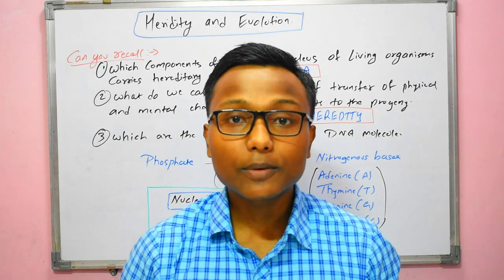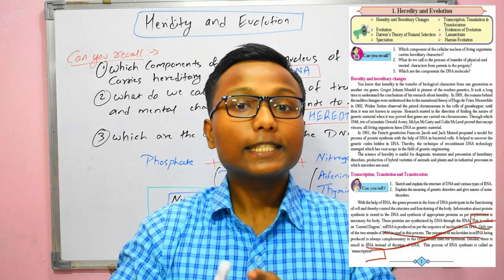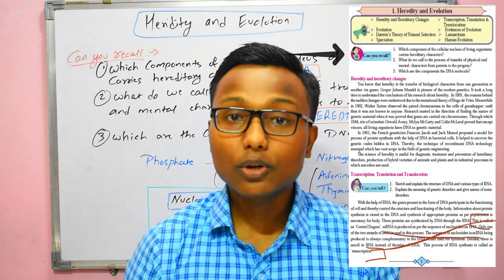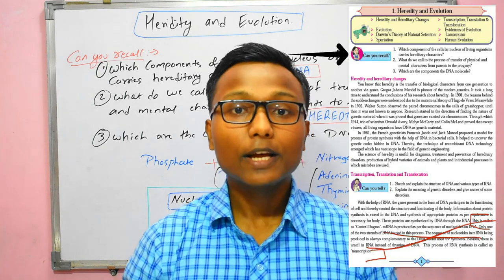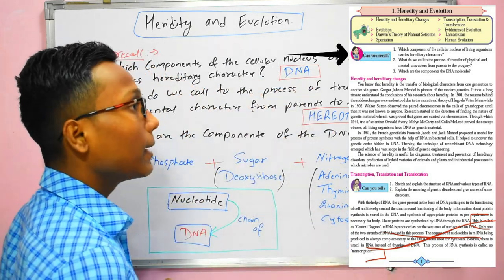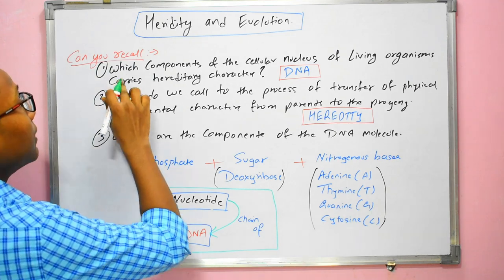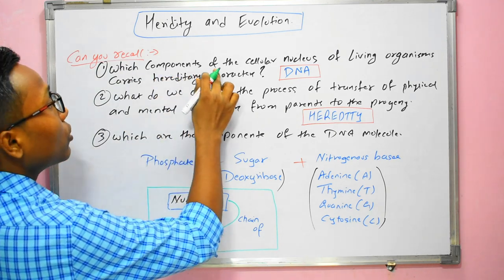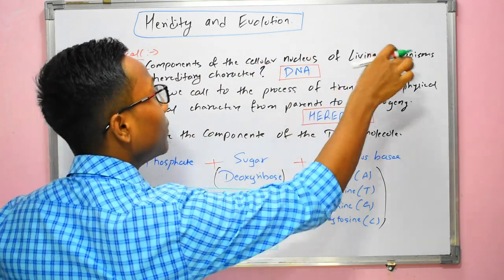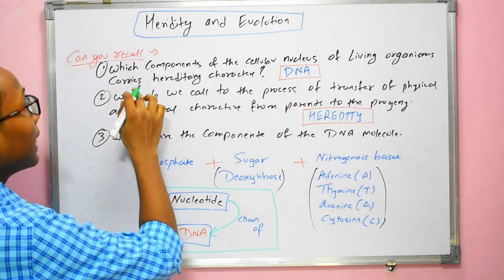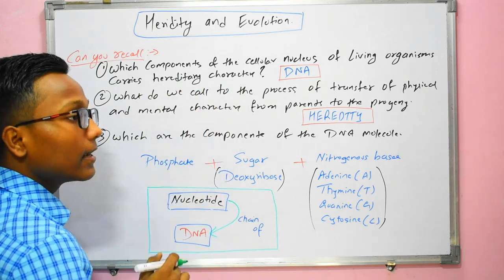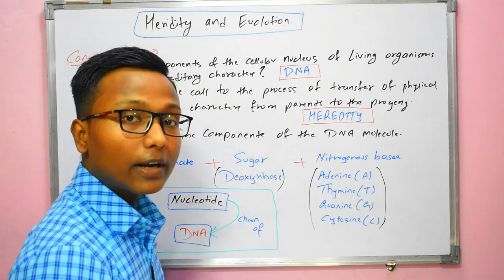Now let's start with page number 1. In this page, you will get a total of 3 can-on-recall questions. I have asked the 3 questions here. This is the first question: which components of the cellular nucleus of a living organism carry hereditary characters?